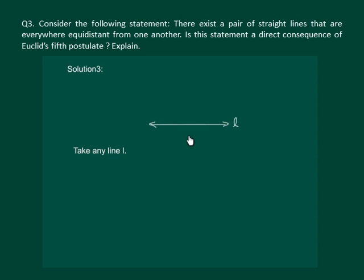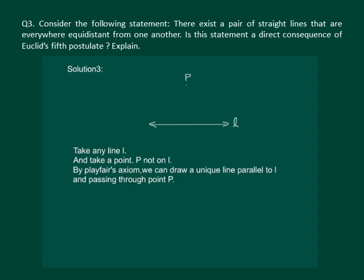Let us take a line L and take a point P which does not lie on L. Then by Playfair's axiom, we can draw a unique line which is parallel to L and which passes through point P.